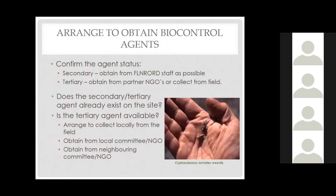To arrange to obtain biocontrol agents, you must first confirm the status. Secondary agents would be obtained from Flenroe staff — the invasive plant program. Tertiary agents would come either from partner agencies or you would be collecting in the field. First, determine whether the secondary or tertiary agent already exists on the site before requesting agents from anybody. You could look in IOP or Invasive Species BC and survey the plants on the site. Tertiary agents are quite widespread in the province, so there's a good chance one will be available on your site of interest. If not, you would need to arrange collections or find sites and discuss with neighboring NGOs or committees.